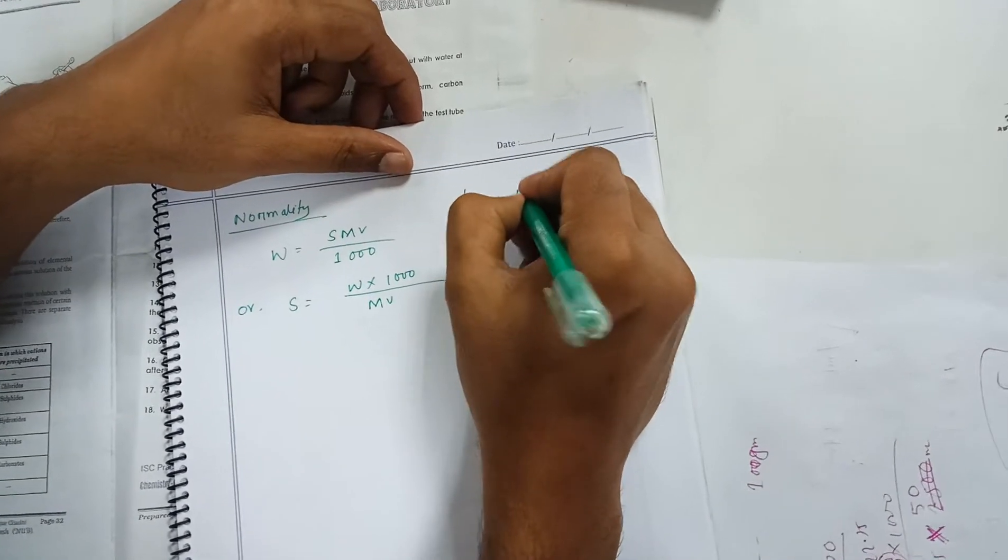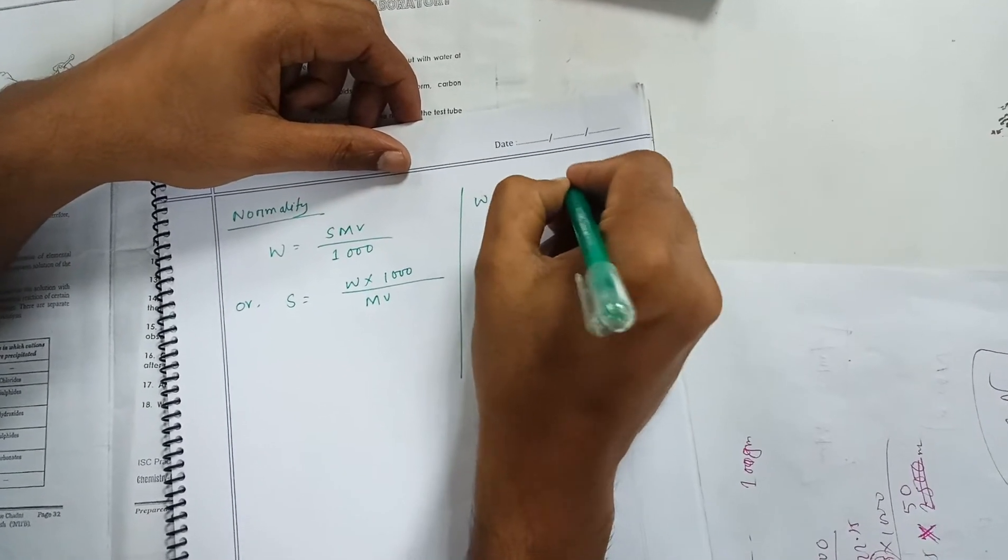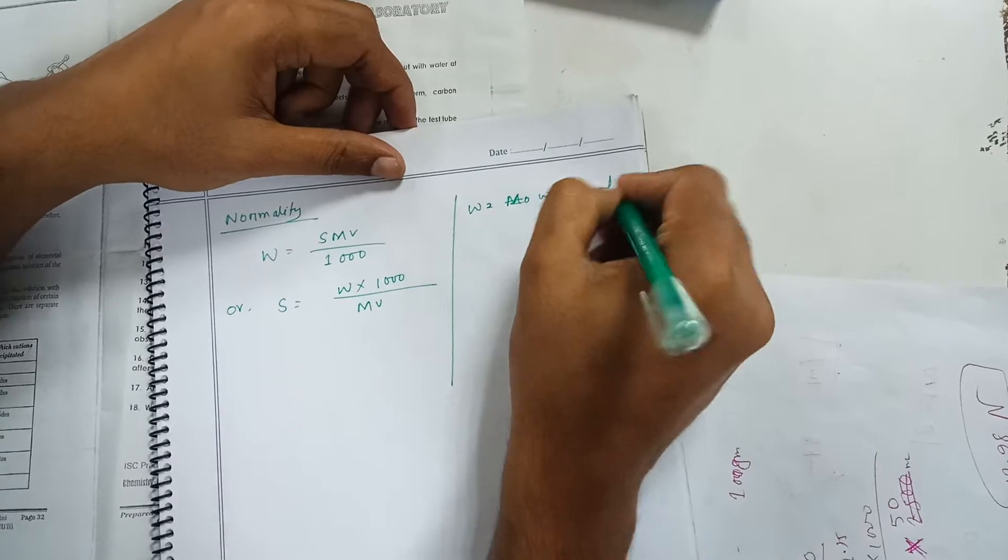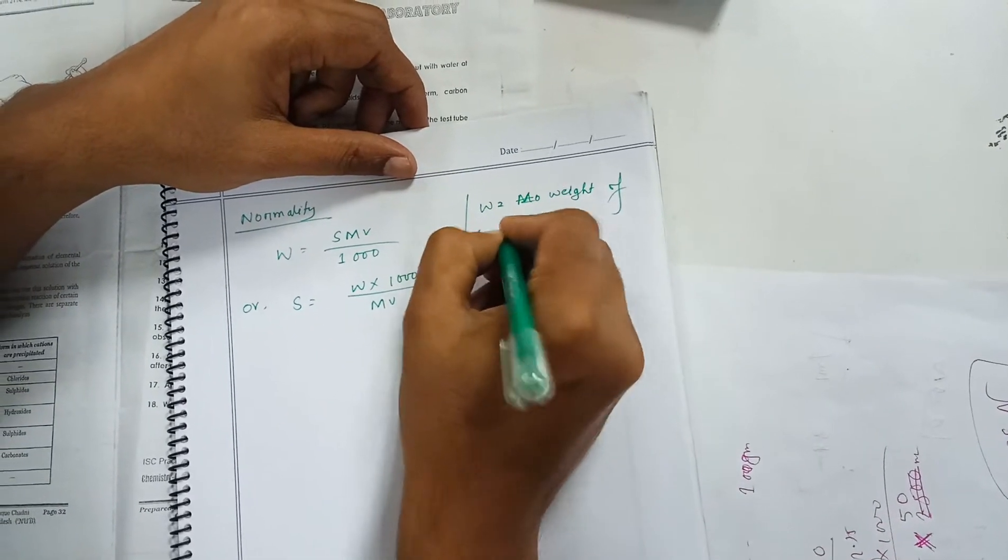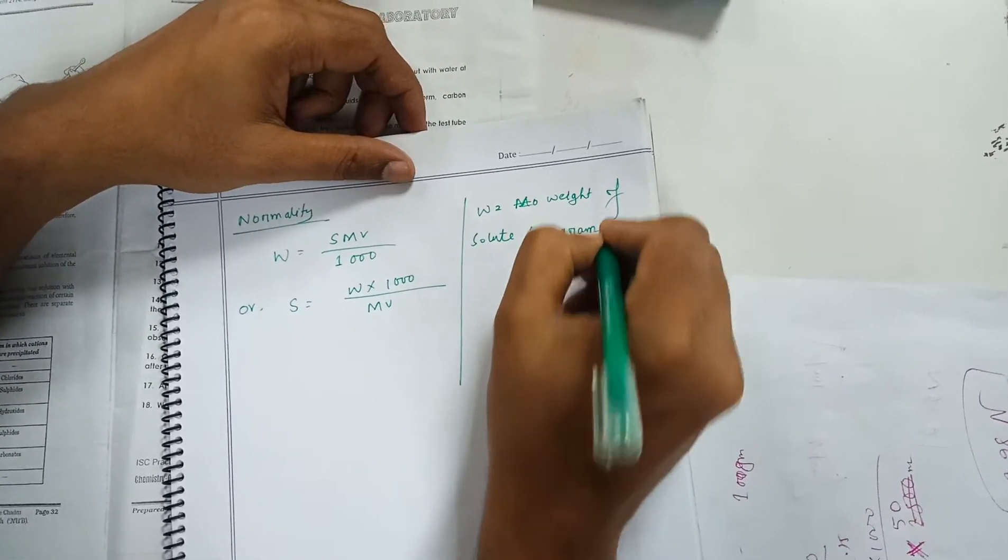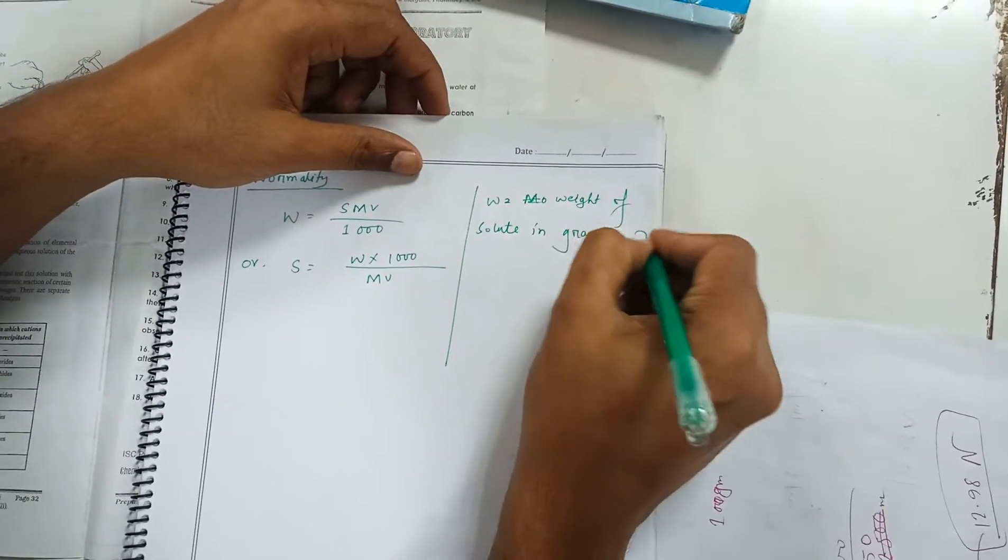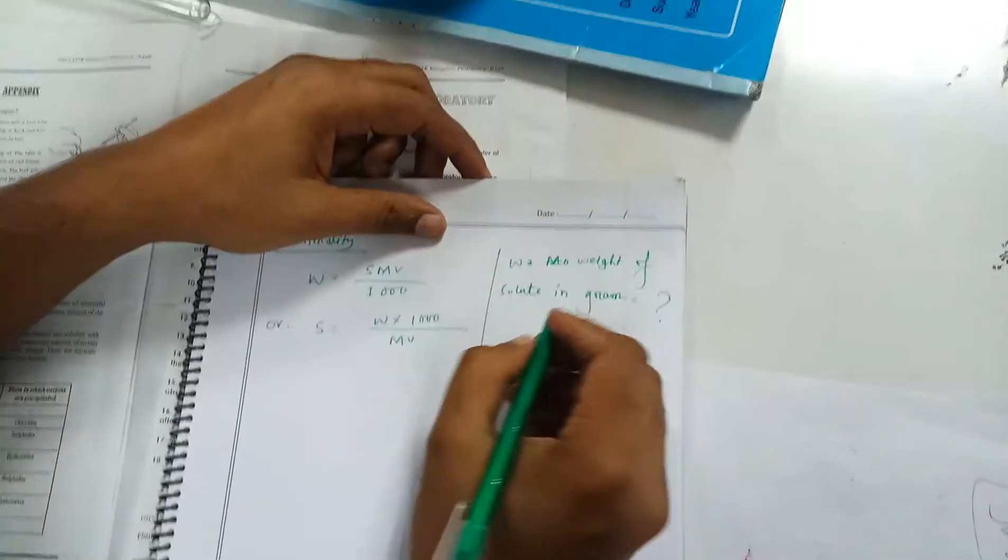Here, W is equal to weight of solute in grams, which is unknown. We have to find out that.